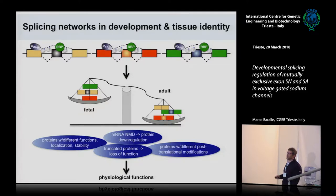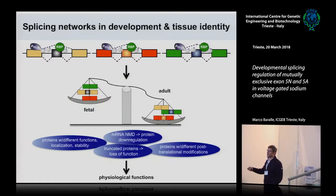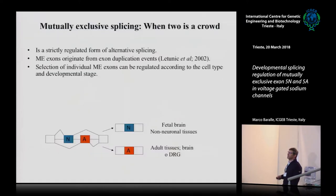I'm going to concentrate on mutually exclusive splicing — whether an exon is the neonatal or the adult exon. These two exons cannot be included together in the final messenger RNA. It's either one or the other — two is a crowd. The model system we're using are voltage-gated sodium channels.